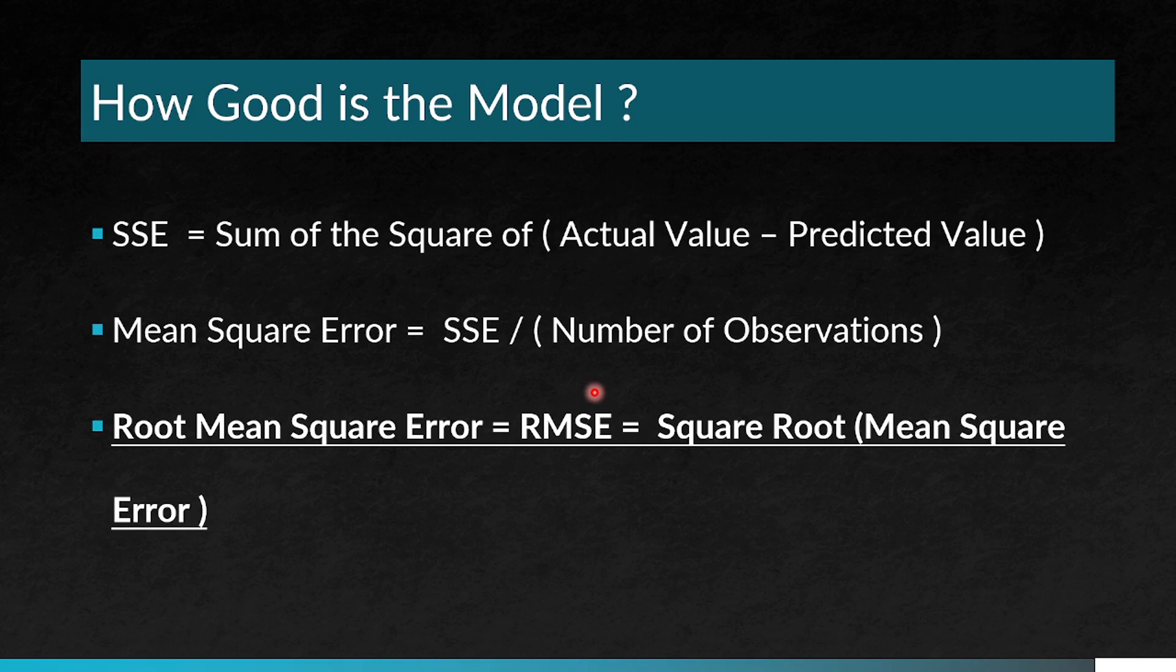Another thing that is very commonly used is the root mean square error. SSE is the sum of square of actual value minus the predicted value which is very easy to understand. The mean square error is SSE by the number of observations. The root mean square error, commonly known as RMSE, is the square root of the mean square error. So very simple metric.